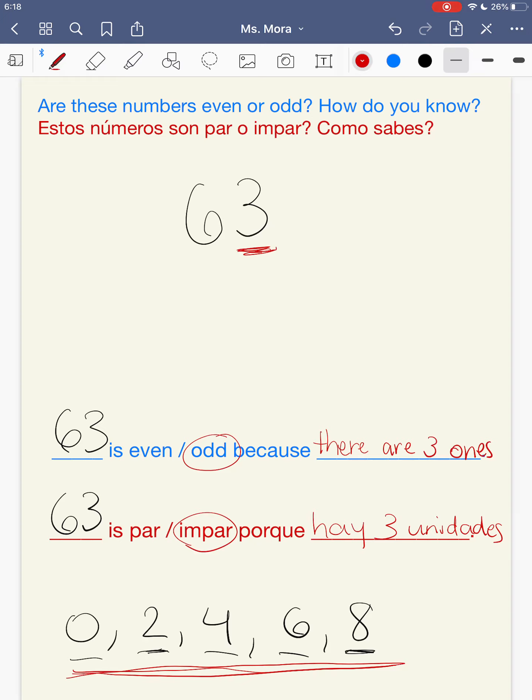But maybe you're going to say, wait, Ms. Mora, there's a 6 right here. And there's a 6 on my list down here. So I think 63 is even. And this is where I'm going to let you guys know that you are not looking at the 10's place. There's 6 in the 10's place. And yes, 6 is an even number. But the number in the 10's place doesn't matter right now. You're only looking at the number in the 1's place. Pero ahorita no estás fijándote en el 6 porque el 6 está en el lugar de las decenas. Y solo vas a enfocar en el número que está en las unidades.